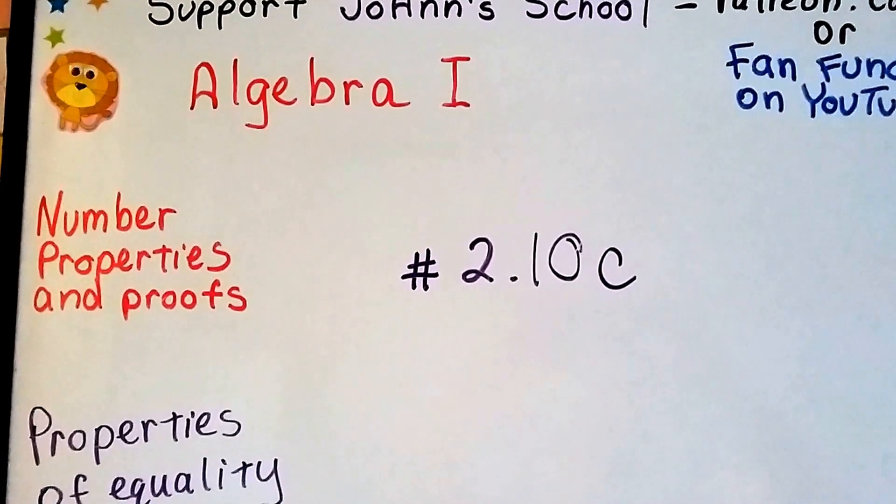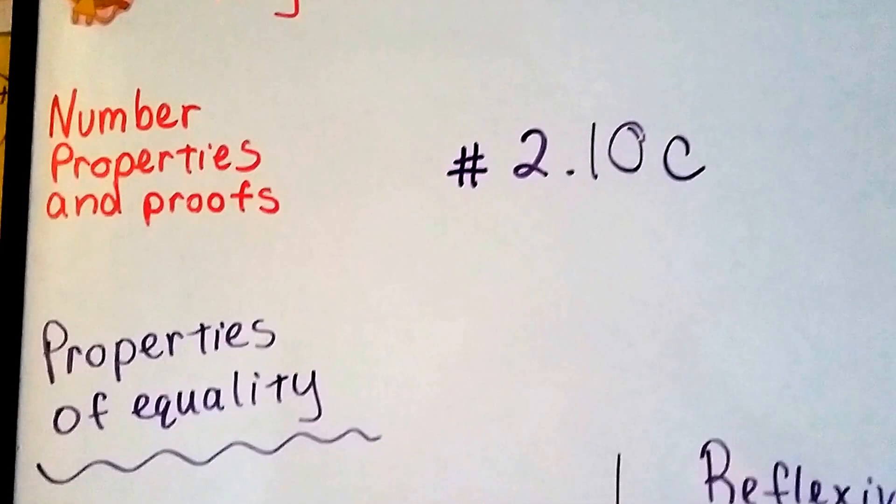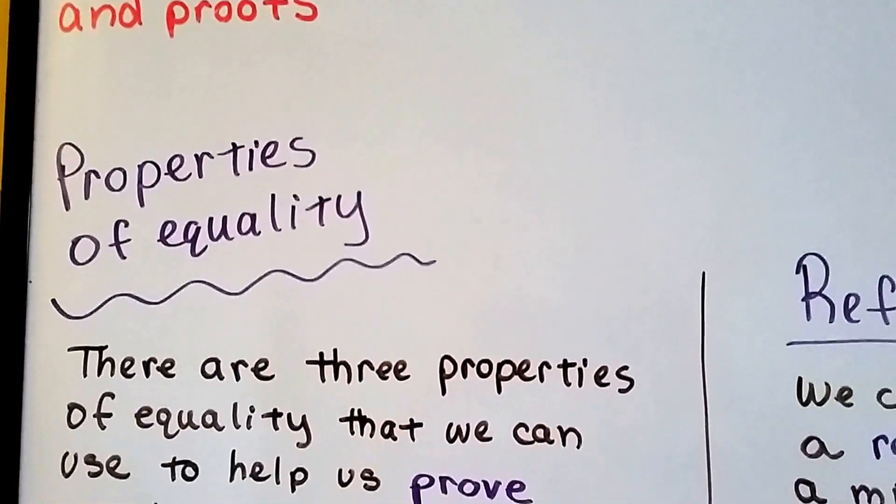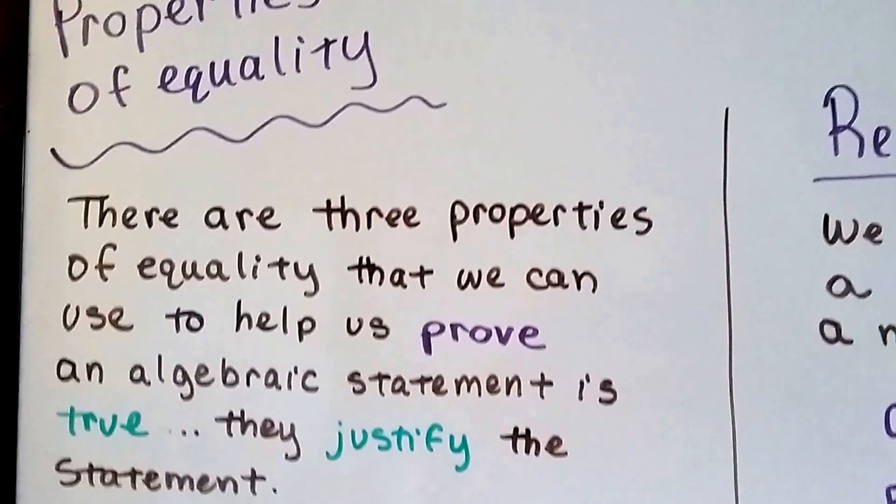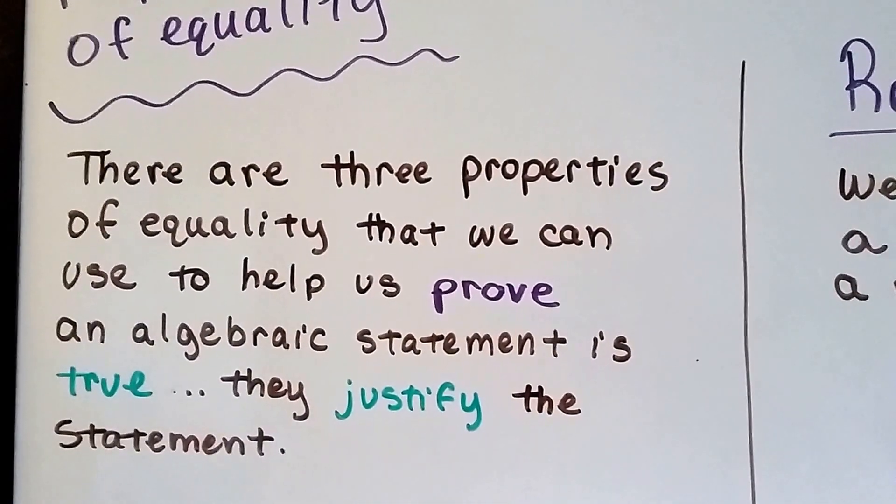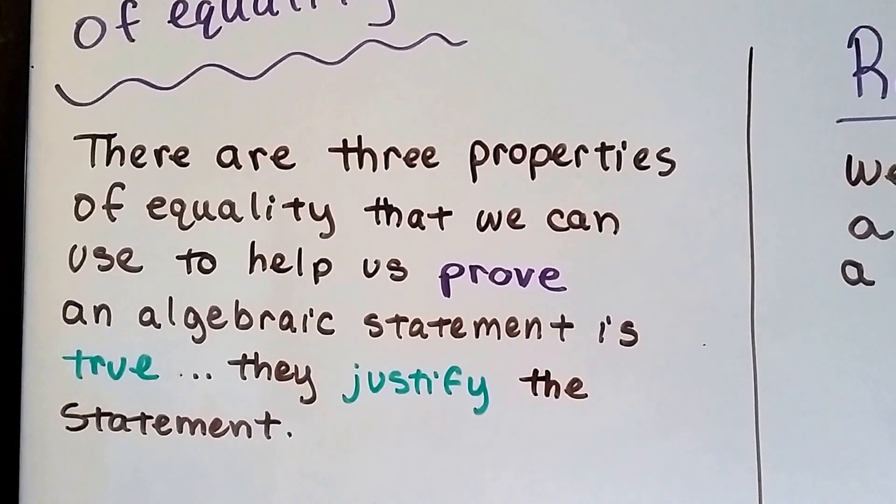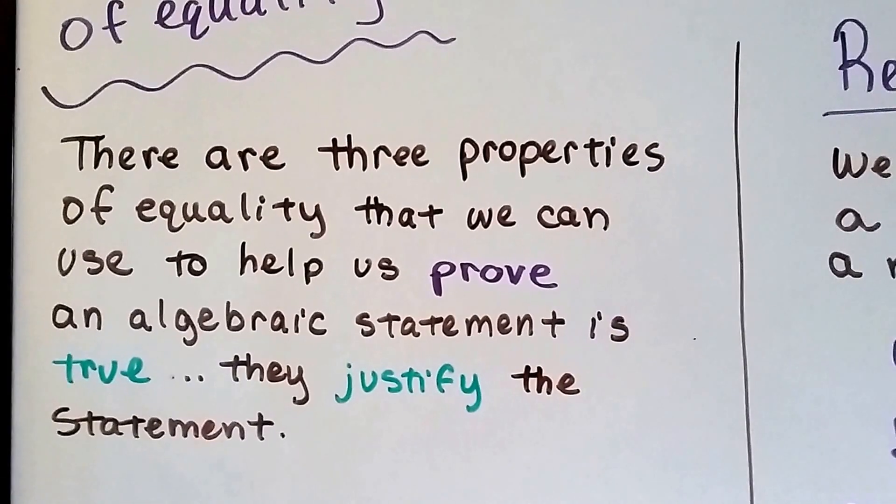Algebra 1 number 2.10c. We're still talking about number properties and proofs. I want to talk about the properties of equality in this video. There are three properties of equality that we can use to help us prove an algebraic statement is true. They justify the statement.